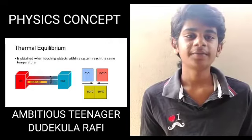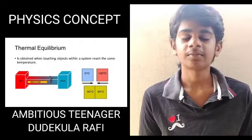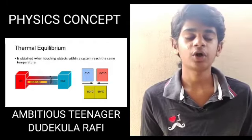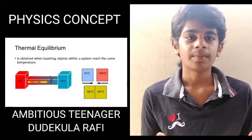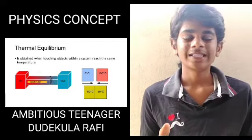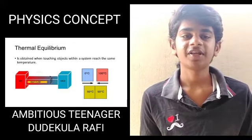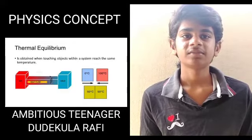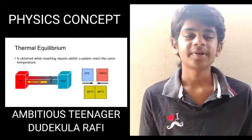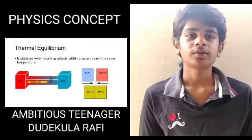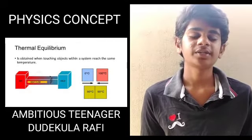Here is the Kairan ball with thermal contact. The Kairan ball is at about 50 degrees Celsius of temperature. Now this other body is at 0 degrees.